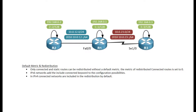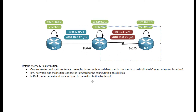I want to talk about redistribution and the default metric when using EIGRP. For this example I have a simple network with three routers. I'm running OSPF between router 1 and router 2, and EIGRP between router 1 and router 3, both for IPv4 and IPv6.